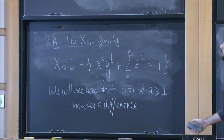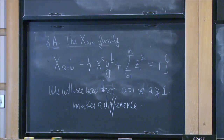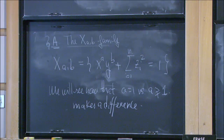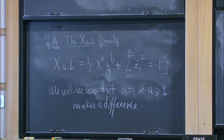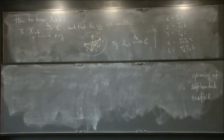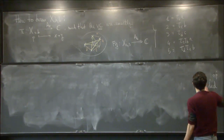Question about computing the cohomology honestly: yes, this relies on the Bourgeois-Ekholm-Eliashberg stuff getting finished for the computation. If you want to compute SH, you could study the wrapped Floer homology of the vanishing cycles — that's still fine but non-trivial, it involves some time and thought. Whereas if they're flexible, you draw it and it's immediate.